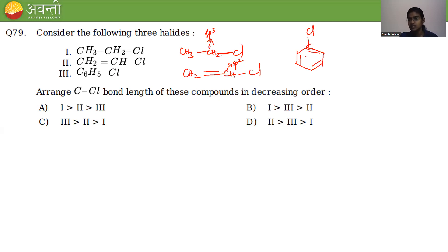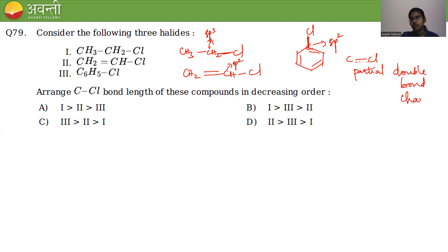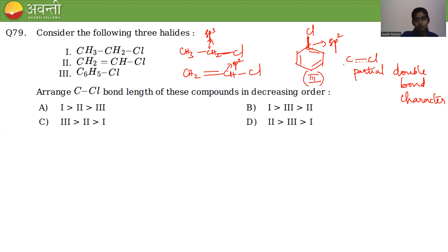In vinyl chloride, the carbon is sp² hybridized and there is delocalization. In chlorobenzene, the phenyl ring undergoes delocalization, so even though the carbon is sp², the C-Cl bond attains partial double-bond character.